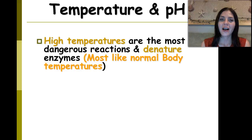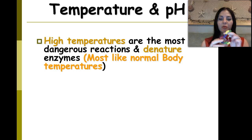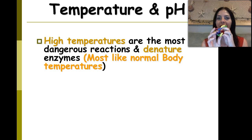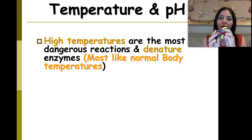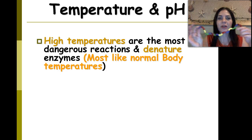Temperature and pH. High temperatures are the most dangerous, and those denature the enzymes. When I say the word denature: enzymes are proteins. Proteins have specific conformations or shapes that they have to go into in order to be effective. When we add extreme heat, or extreme cold, or a very strong acid or base, it causes all of those bonds to break down, and we say that that denatures the protein. So, this protein can no longer function.